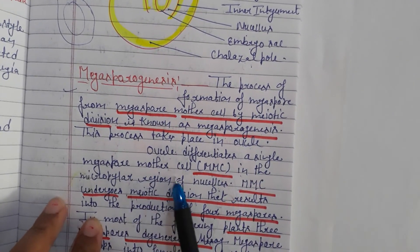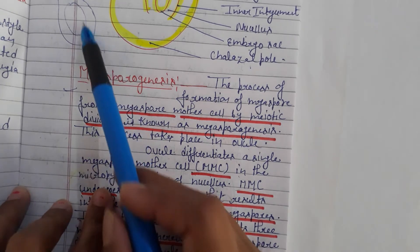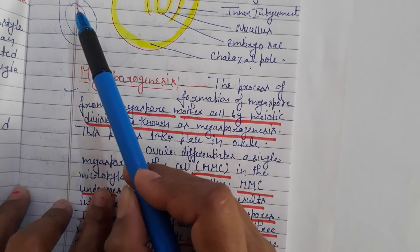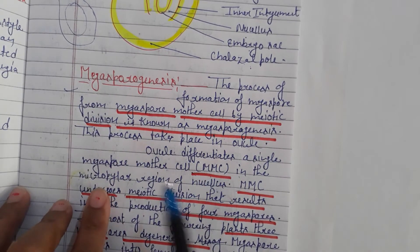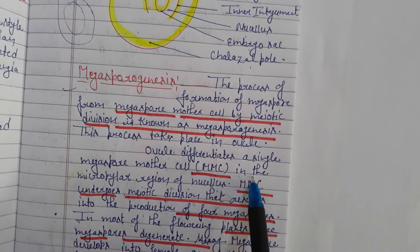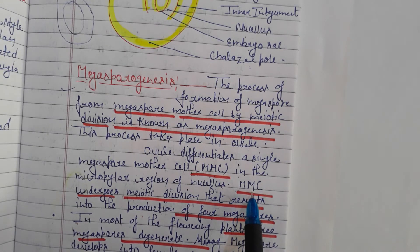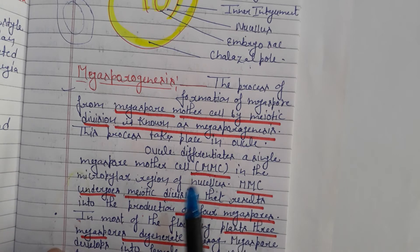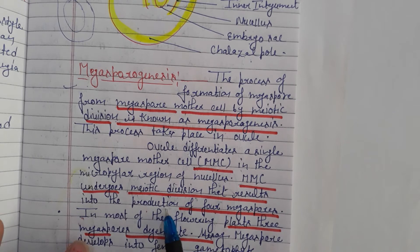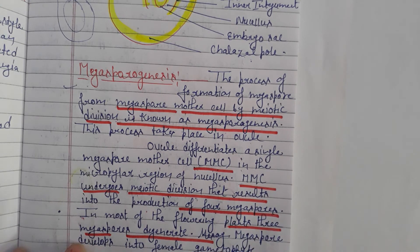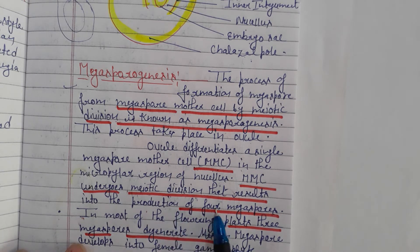The ovule makes a large cell — the megaspore mother cell — in the micropyle region of the nucellus. The MMC undergoes meiotic division, resulting in the production of 4 megaspores. This meiotic division is reductional, producing 4 haploid cells. The 4 cells at the two-cell stage are called the dyad, and the final 4-cell stage is the tetrad.